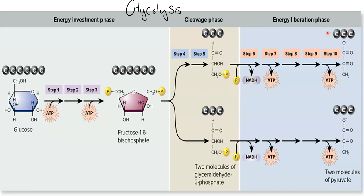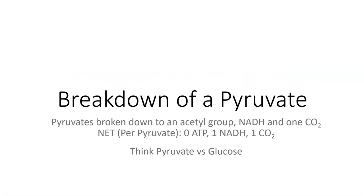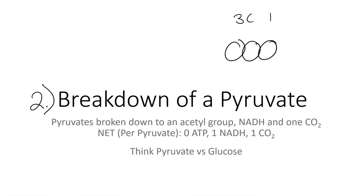Now we're going to take those three-carbon molecules of pyruvate and see what happens to them in the second step of cellular respiration. Step two is pretty intuitive — the name tells you exactly what's going to happen: it is the breakdown of pyruvate. We take our three-carbon pyruvate and break it down into a two-carbon molecule, which we call an acetyl group.